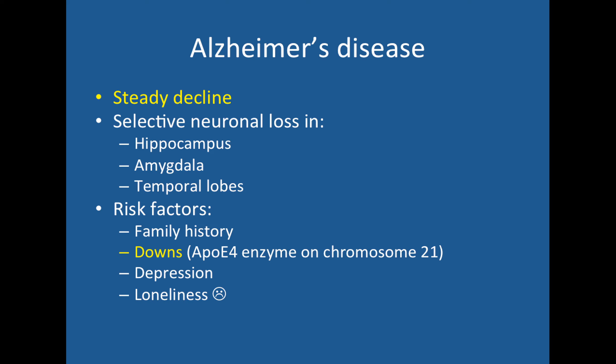Alzheimer's disease generally shows a steady decline in memory and cognitive function with selective neuronal loss in the hippocampus, amygdala and temporal lobes. Risk factors include family history of Alzheimer's disease, and Down syndrome is an important one favoured in exams — because the ApoE4 gene is on chromosome 21, people with trisomy 21 have more of this gene and are more likely to develop early onset Alzheimer's. Depression and loneliness can also contribute to Alzheimer's risk.